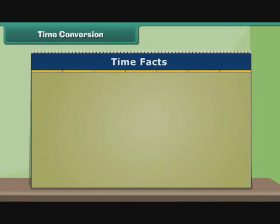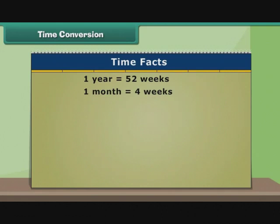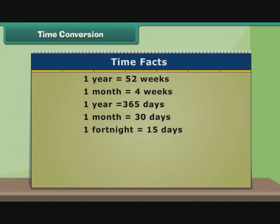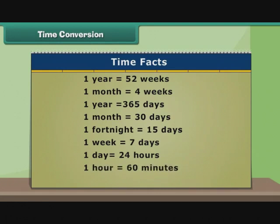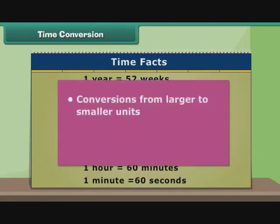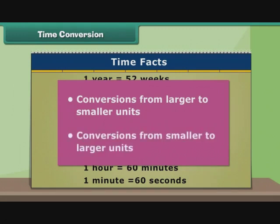Here are some facts about time: 1 year = 52 weeks; 1 month = 4 weeks; 1 year = 365 days; 1 month = 30 days; 1 fortnight = 15 days; 1 week = 7 days; 1 day = 24 hours; 1 hour = 60 minutes; 1 minute = 60 seconds. Let us use these facts to perform conversions from larger to smaller units and from smaller to larger units.